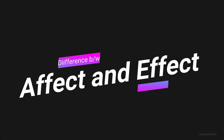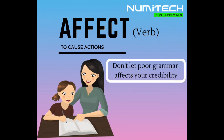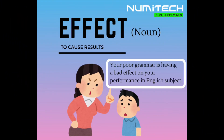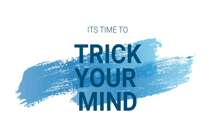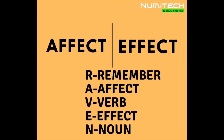The last homophone is the difference between 'affect' and 'effect.' 'Affect,' which starts with A, means to cause actions. 'Effect,' which starts with E, means to cause results. We can remember this using the mnemonic abbreviated as the word RAVEN.